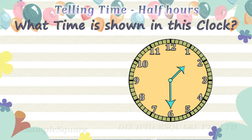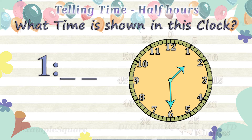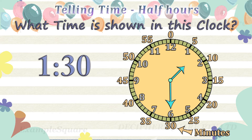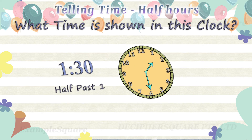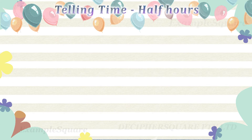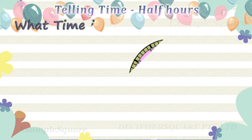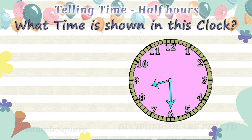What time is shown in this clock? The short hand, that is the hour hand, is pointing in between one and two, so the time is one hour and some minutes. The long hand, that is the minute hand, is pointing at six — the minute hand is referring to thirty minutes. The time shown here is half past one, or one thirty.